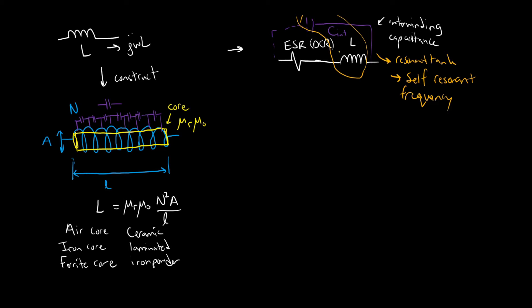With an L and a C grouped together, we have some kind of resonant tank, which means we have a resonant frequency known as the self-resonant frequency. It's the point at which the impedances are equal and opposite and cancel out. Beyond that point, this inductor looks more like a capacitor — similar to how a capacitor at some point looks more like an inductor.